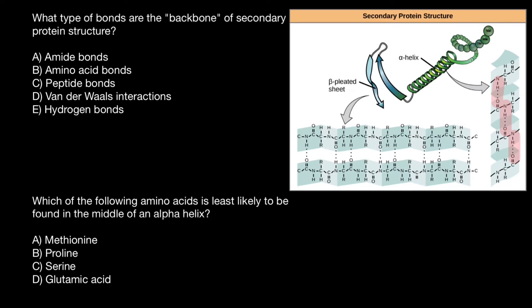And the same is true for beta pleated sheets. Again, here we have hydrogen bonding between amino group of one amino acid and carboxylic group of another amino acid. So now we can choose the correct answer, which is answer E.